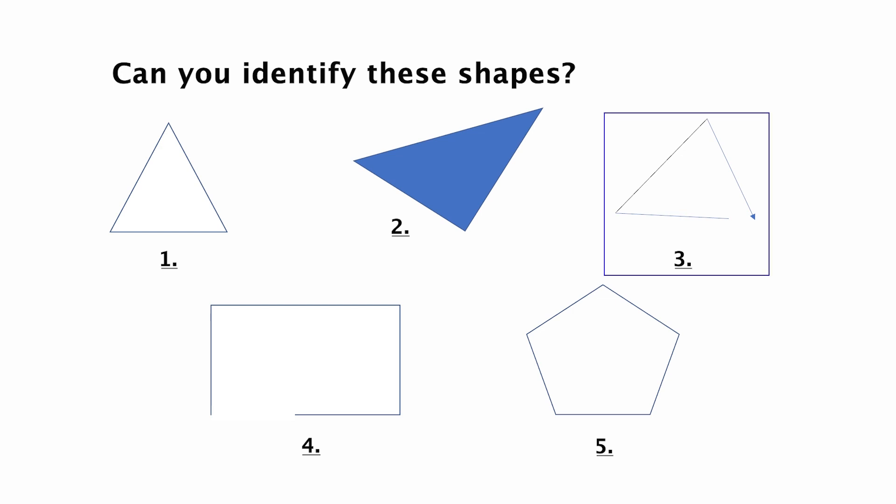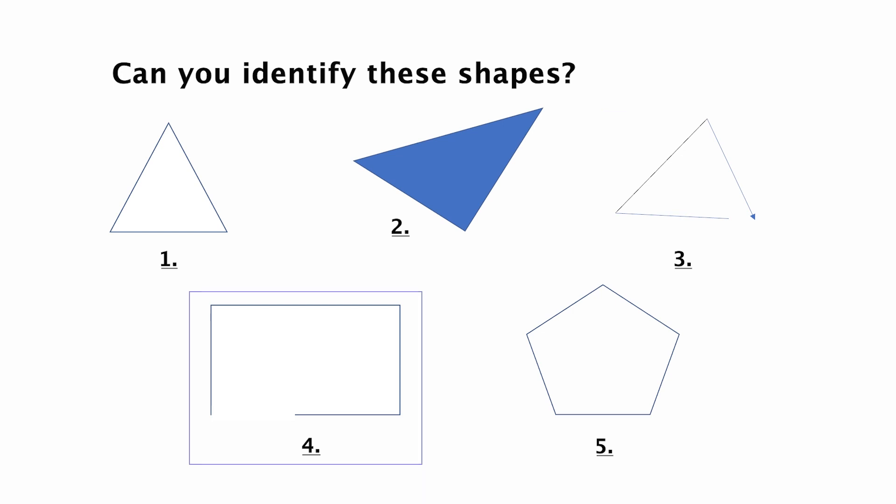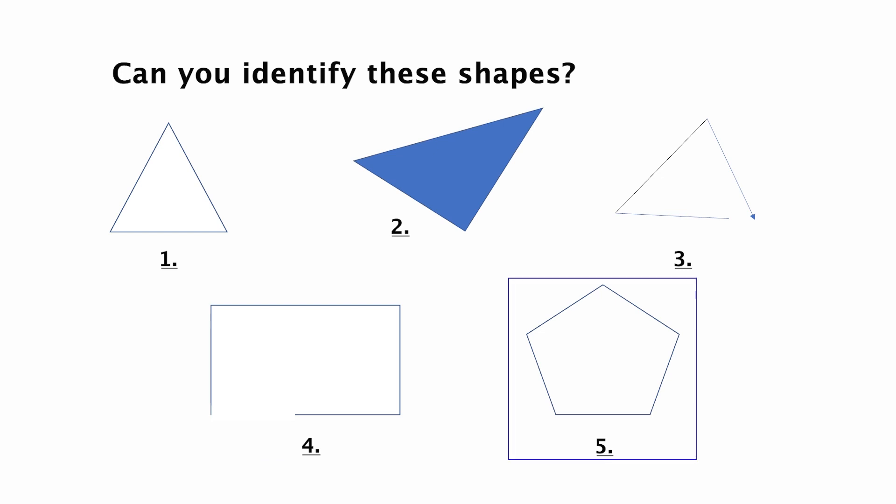Now the third shape has three sides, but the three lines are not forming a closed figure. So can we call this a triangle? No — this is not a triangle as it is not a closed figure. For a shape to be a triangle, it must be a closed space with three lines. The next image has four sides but is open, so it cannot be called a rectangle either. The last shape has five sides and is a closed figure — we call it a pentagon.